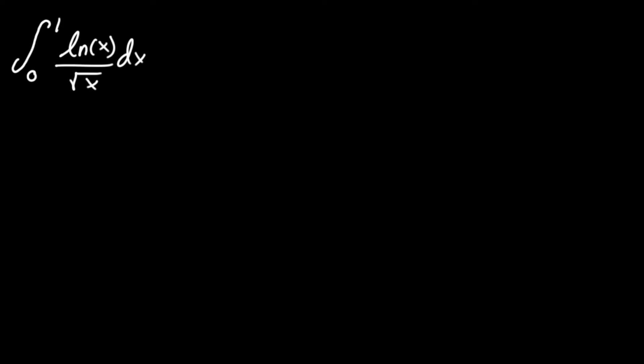What is the integral of ln(x) over √x dx between 0 and 1? What makes this problem difficult is two things: one, the limits are between 0 and 1 and plugging in 0 directly creates an undefined solution, and second, these don't integrate well together because if we took u-substitution of ln(x) it would not fully cancel the √x.